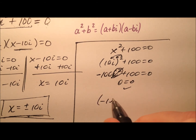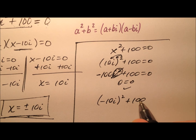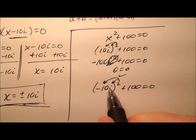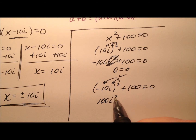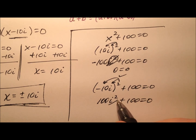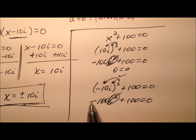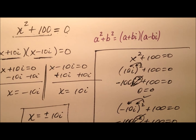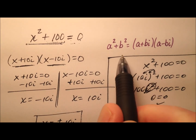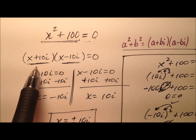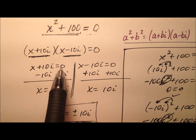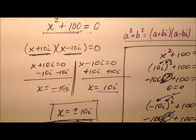How about negative 10i? So negative 10i squared plus 100 equals zero. When I square negative 10 and square the i, negative 10 squared is positive 100, and then i squared is negative one. So we get negative 100 plus 100, and zero equals zero — so it works out. We started with x squared plus 100 equals zero, used the sum of squares factorization, then the zero property of multiplication to set each factor equal to zero. So x equals plus or minus 10i.